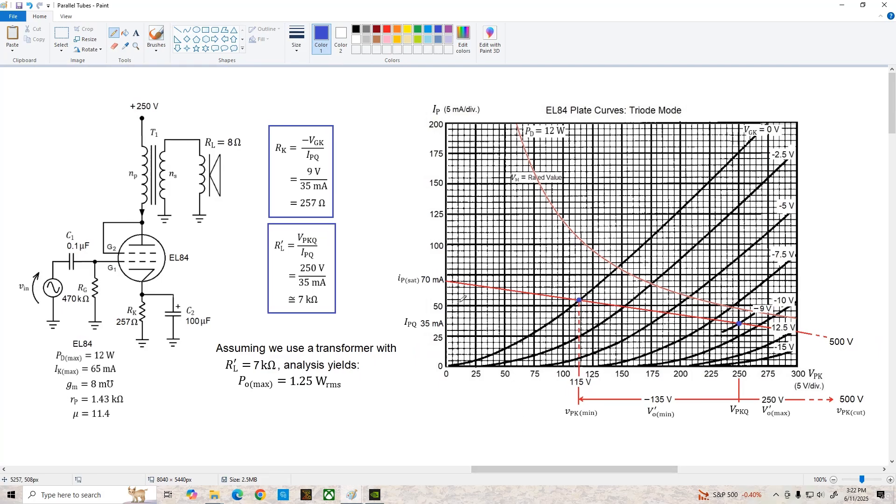I've labeled all the pertinent points on the ac load line here and I'm calling the maximum signal swing limits across the tube v prime o min and v prime o max. Remember these are going to be stepped down by our output coupling transformer significantly so we would call the actual output values vo max and vo min. Notice that I've got the parameters for the tube over here as well: transconductance 8 millimos, dynamic plate resistance 1.43 k ohms and mu is 11.4, and those are based on estimates using our cue point location here.